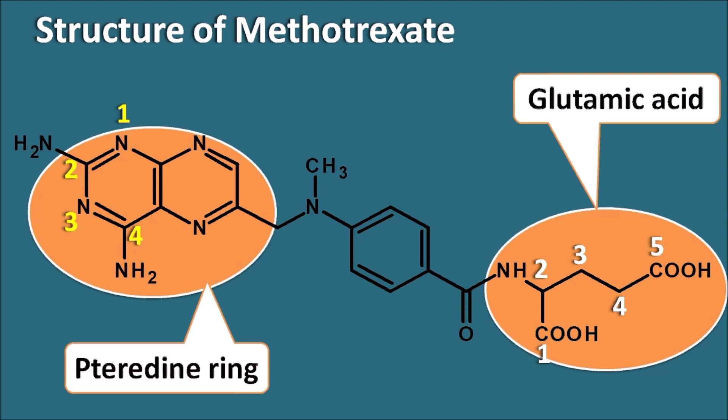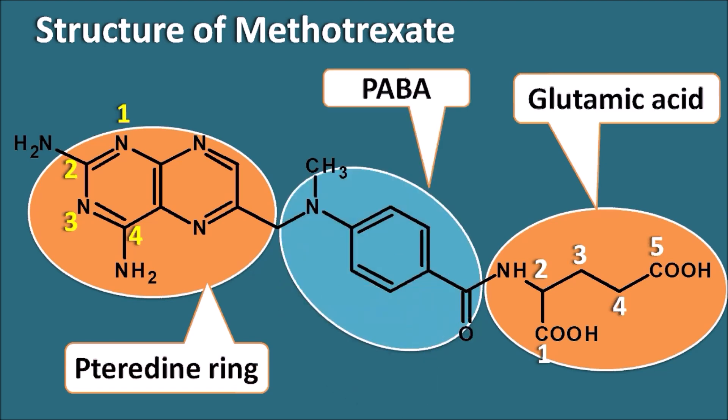The third important moiety in methotrexate is PABA — para-aminobenzoic acid. The carboxylic acid group is at the first position and the amine group is at the fourth position of the benzene ring. It is a para-aminobenzoic acid analog with a methyl group substituted on the nitrogen.